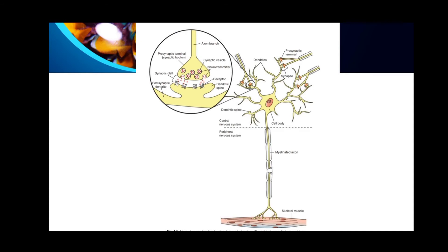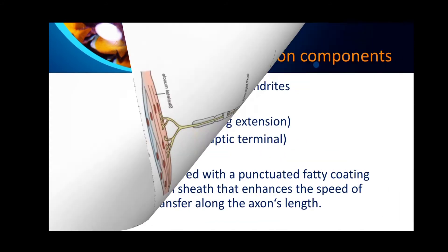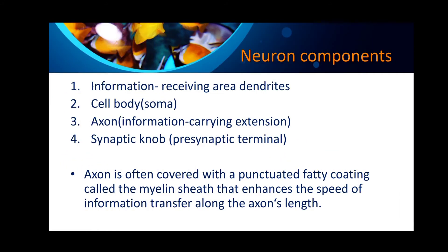Regarding the structure of the neuron, many dendrites are visible and a single axon is visible. The information-receiving area of the neuron is called dendrites. Dendrites are many in number and serve as the information-receiving area. The cell body is also known as the soma.